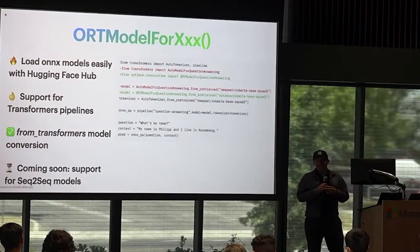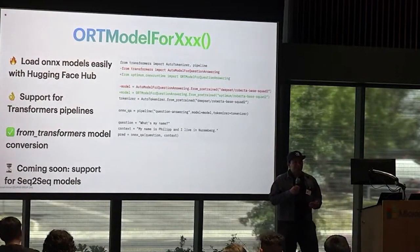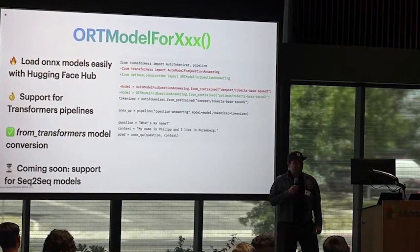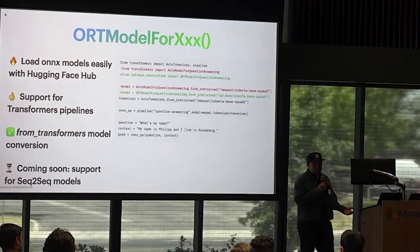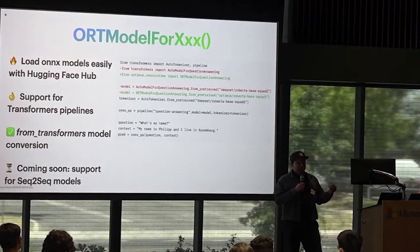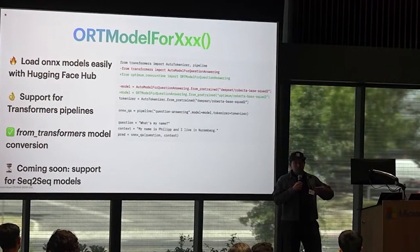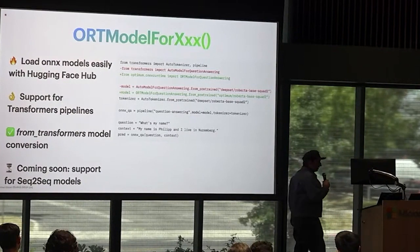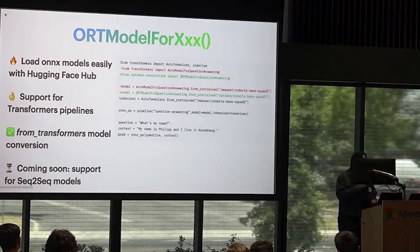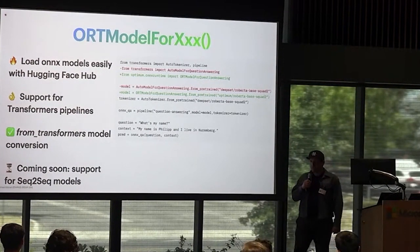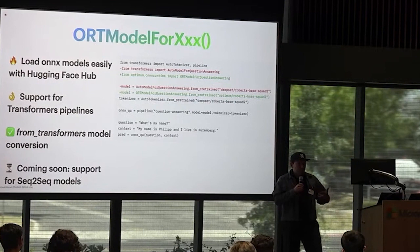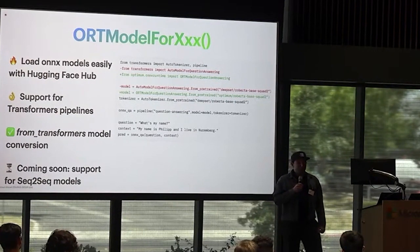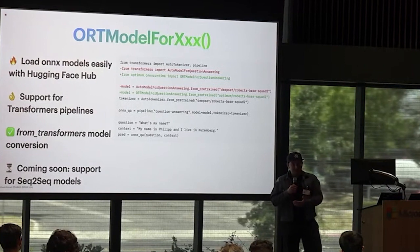Last, if you're familiar with Transformers' AutoModel-for-task classes, with Optimum you can do the same for ONNX Runtime by switching to the ORTModel-for-task class — again just a very easy change to benefit from all the hardware acceleration ONNX Runtime provides. Something the community is especially excited about is that we're collaborating to enable sequence-to-sequence model optimization through these Optimum accelerated inference pipeline classes.